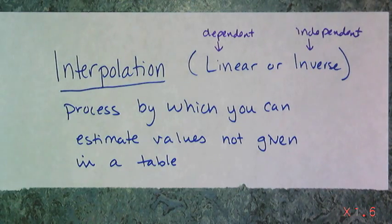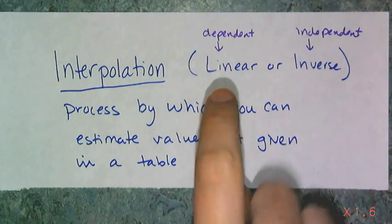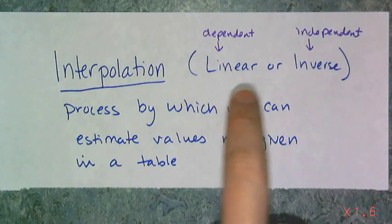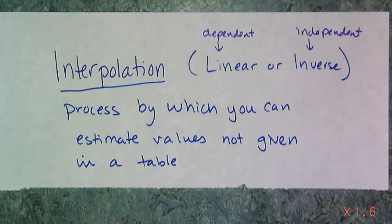There are two types of interpolation you might hear about: linear and inverse. You're finding the dependent variable when you do linear, and you're finding the independent variable when you're using inverse. It doesn't matter. It's all the same. It's a process which can give you estimated values that are not given in a table.